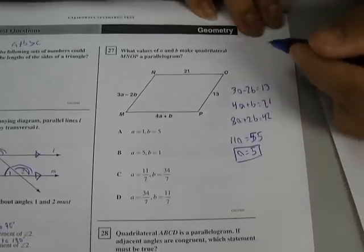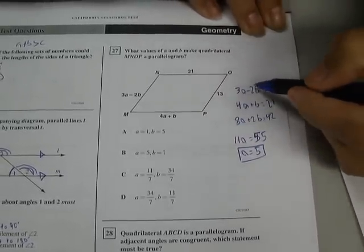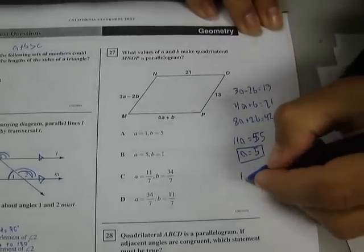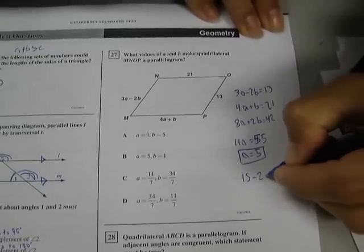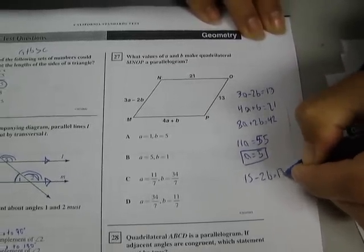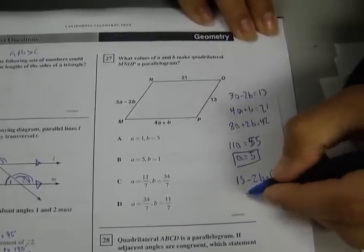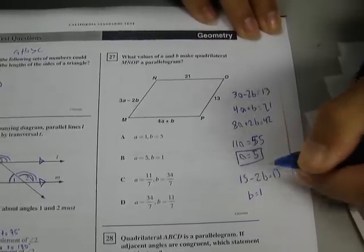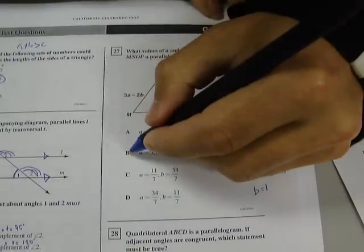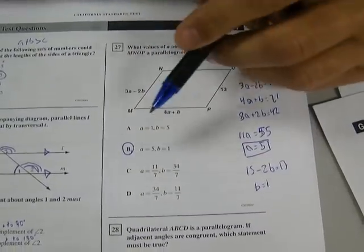Watch what happens. 3A plus 8A is 11A. 2B plus negative 2B equals 0. And 13 plus 42 equals 55. Therefore, if 11A equals 55, then A has to equal 5. If A equals 5, we can plug that back in. Let's plug it into this one. 3 times 5 is 15. So 15 minus 2B equals 13. Therefore, B has to equal 1. So A equals 5, B equals 1. That is B.